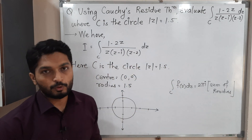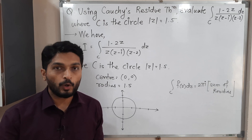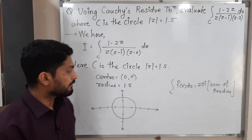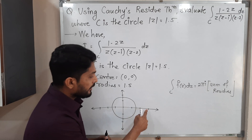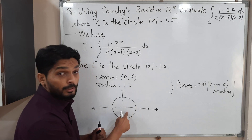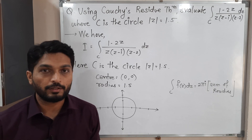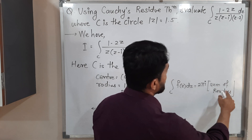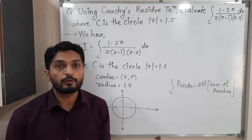That means first we write the given function, then we find the points where the function is not analytic — we call them singular points. We check whether those singular points lie inside or outside the curve. If any singular point lies outside, no need to take care of it. If a singular point lies inside, we find the residue at that point.